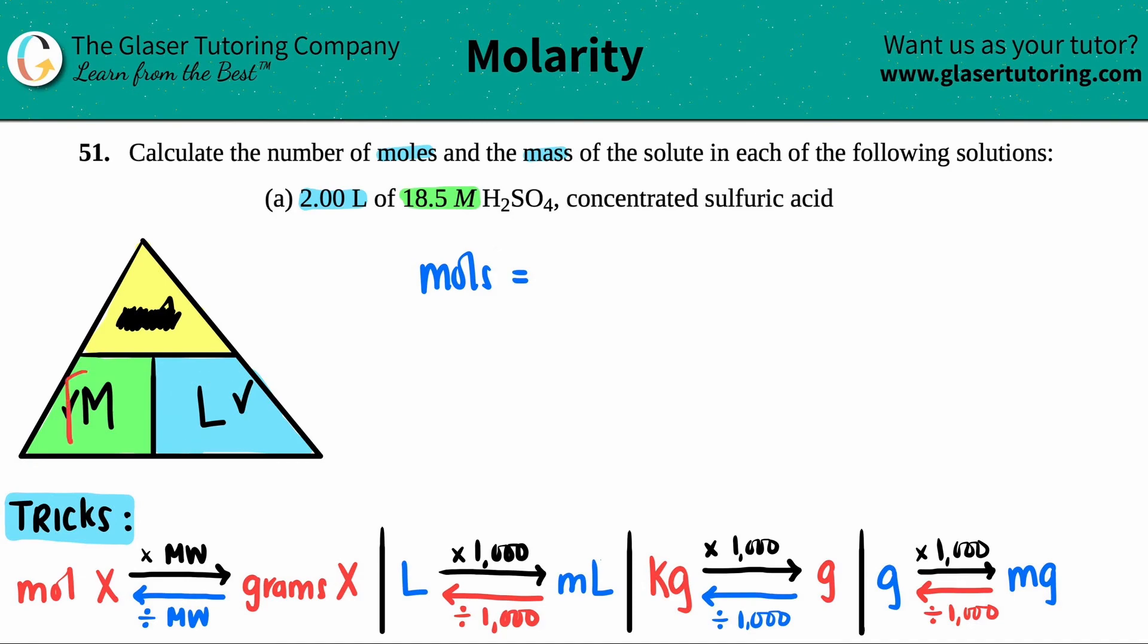Since they're on the same tier, they're both on the bottom, one is not on top of the other, you would multiply them. If you have a relationship that's on the top or the bottom, it's division. So in this case, moles equals molarity times liters.